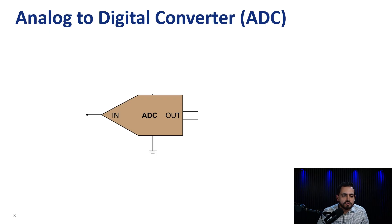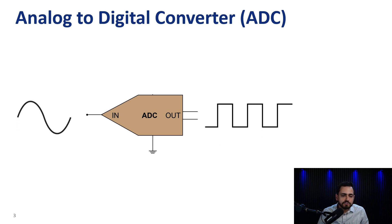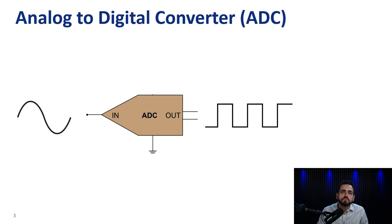An analog-to-digital converter, or an ADC, is an electronic device or circuit that converts continuous analog inputs into discrete digital outputs. This process allows analog signals to be represented in the digital domain as digital information. Those digital outputs could be fed into digital systems such as microcontrollers, digital signal processors, or even computers for processing, storage, or transmission.